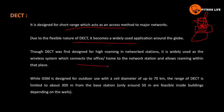DECT is the main cordless standard. While GSM is designed for outdoor use with a cell diameter of up to 70 km, DECT is limited to about 300 meters - or 50 to 300 meters depending on walls. This is the key difference between GSM and DECT.